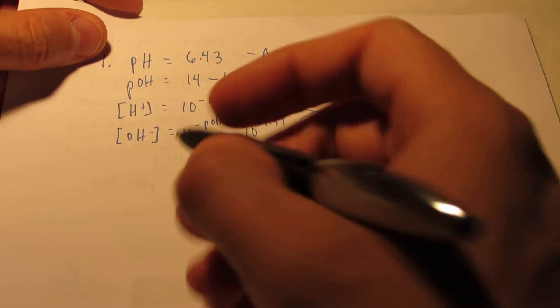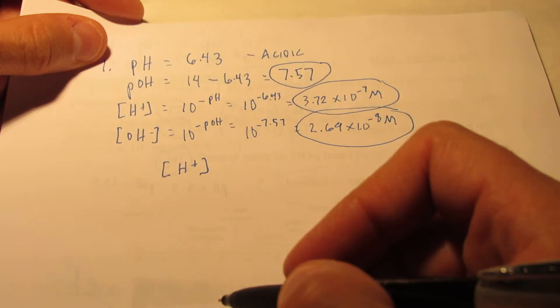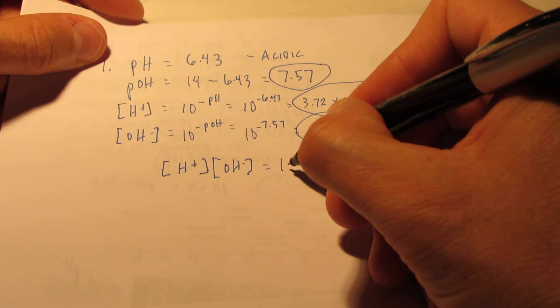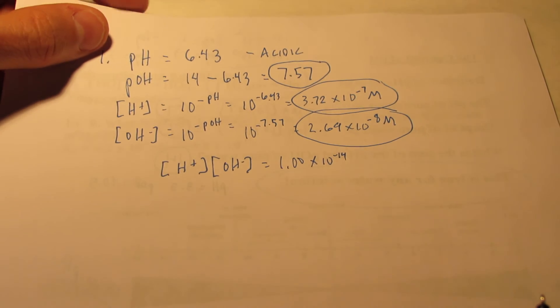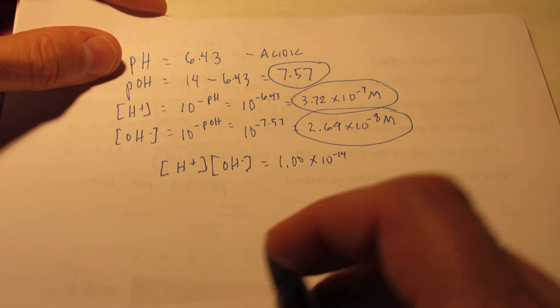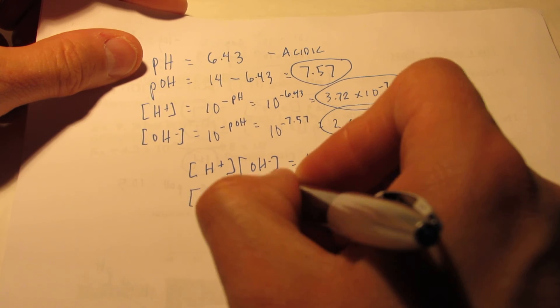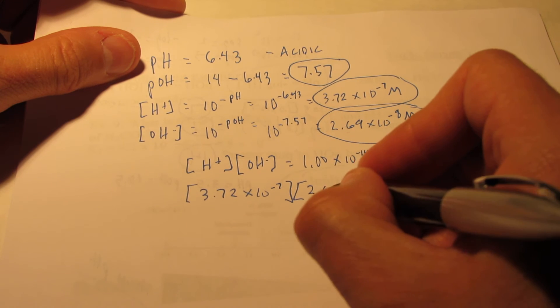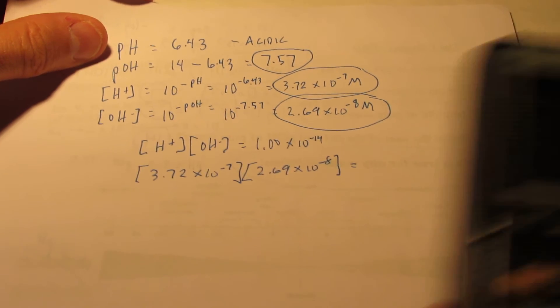Now just for fun, isn't this true? In any water solution, the hydronium concentration times the hydroxide concentration should be 1 times 10 to the negative 14. Should we put it to the test? Let's do that. The H plus is 3.72 times 10 to the negative 7, and the hydroxide is 2.69 times 10 to the negative 8. So let's do that.